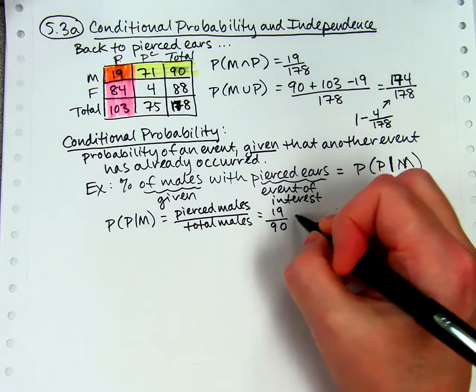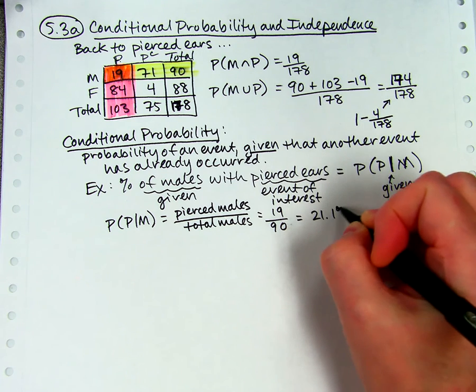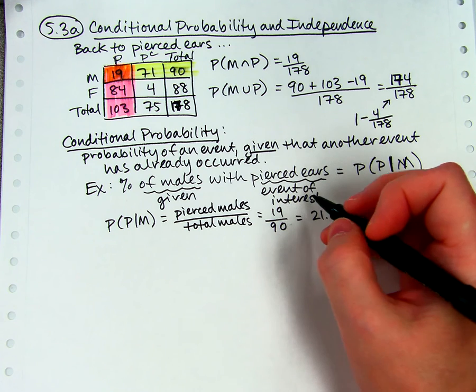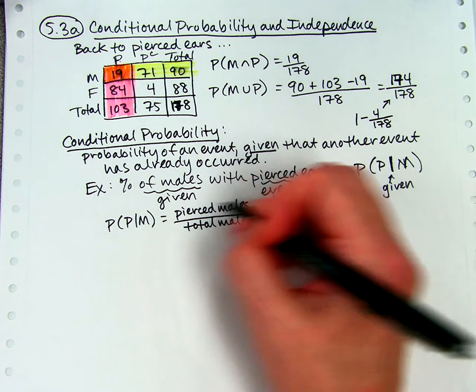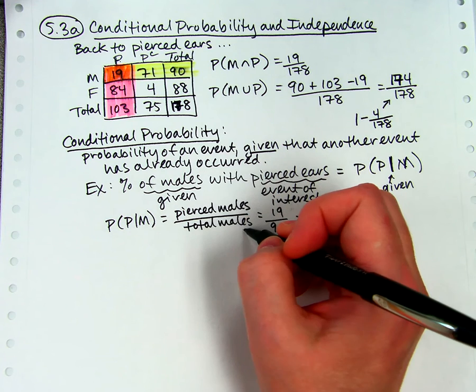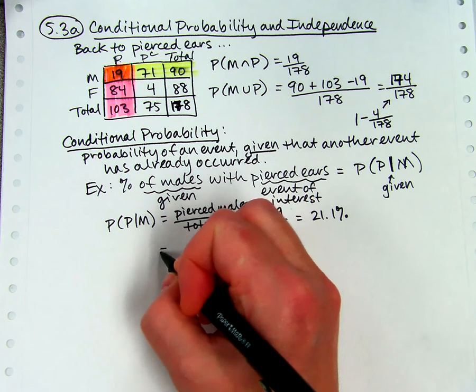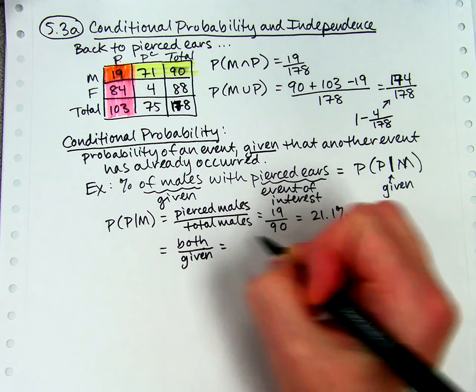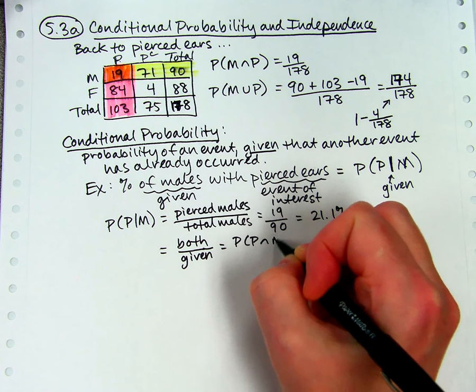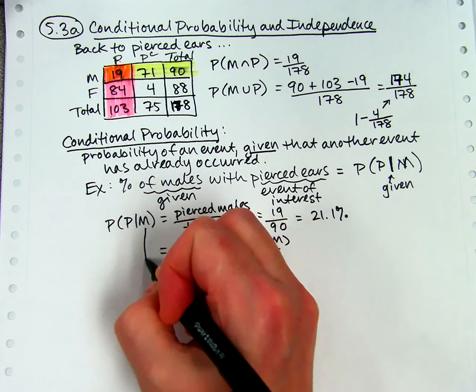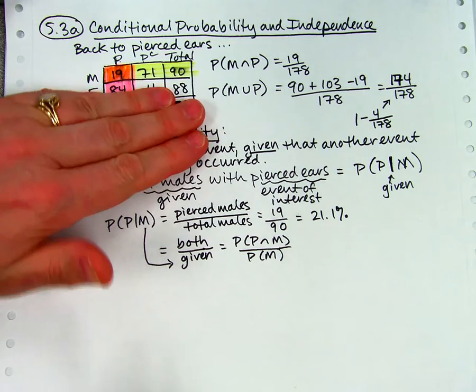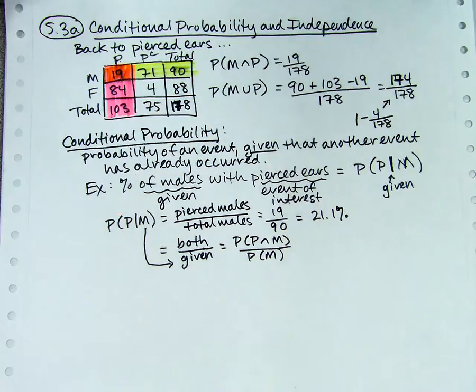If I want the probability of pierced given male, I would take the pierced males divided by the total males, which is 19 over 90. Notice that's not the same as 19 over 178. It's 21.1%. The most important thing you need to know is that the numerator is the both, or both be pierced and male, and the denominator is the given. So it's also the both over the given. Or in symbols, it's the probability of pierced and male divided by the probability of male. The thing that's given goes on the bottom. That's kind of a common sense thing.